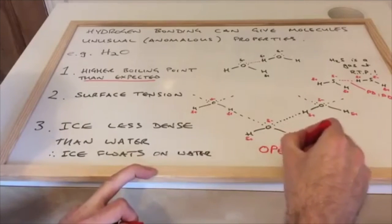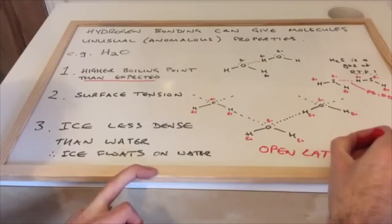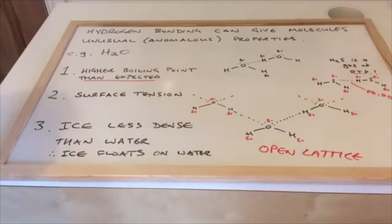lattice. So it gets an open lattice structure with a greater volume than the 10 grams of water had to start with, and so its density decreases. So ice is less dense than water, and that's why it floats.